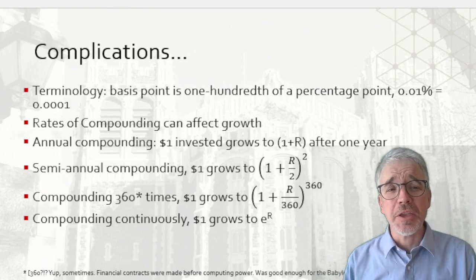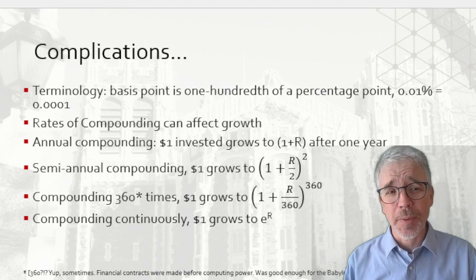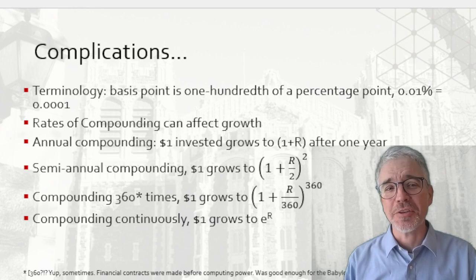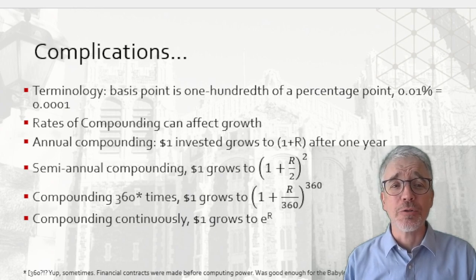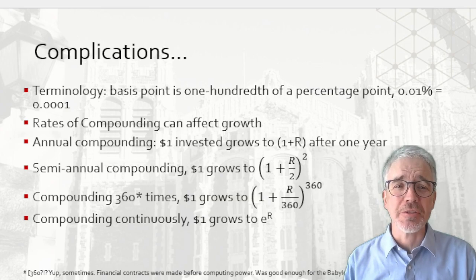After a year, the initial investment would grow by (1 + R/4) to the fourth power. Now, you could do that every month, in which case it's (1 + R/12) to the 12th power. Heck, you could do it 360 times. It would be (1 + R/360) to the 360th power.